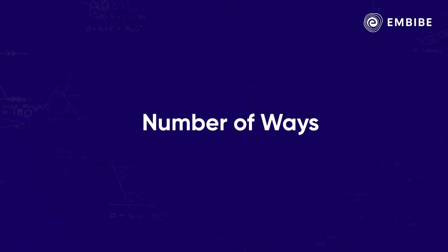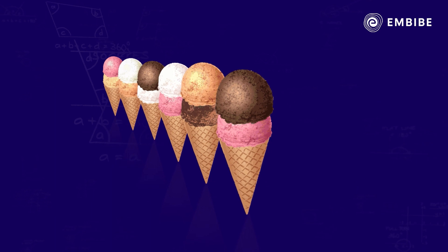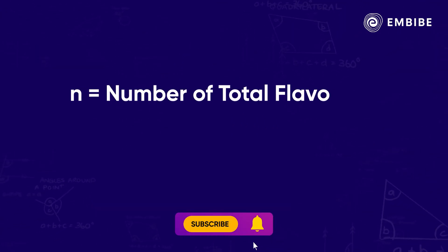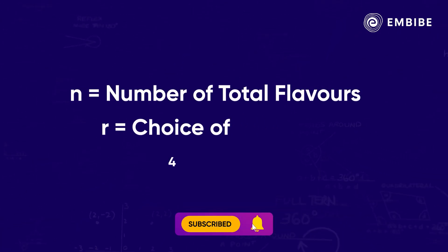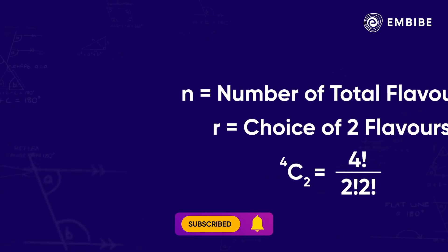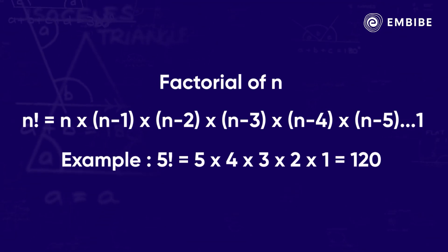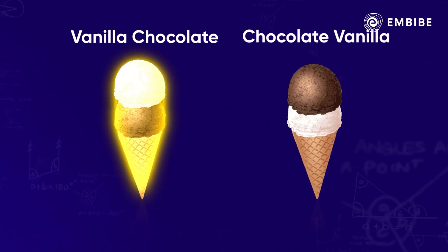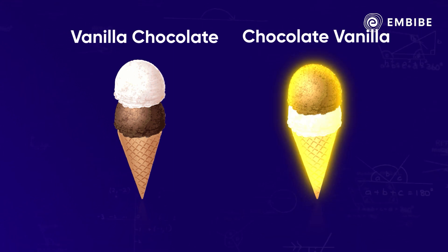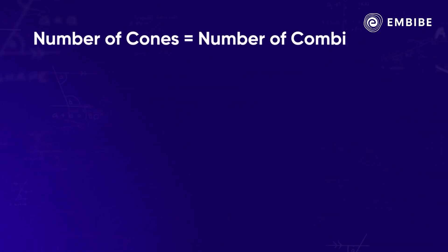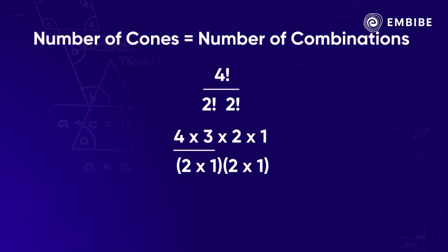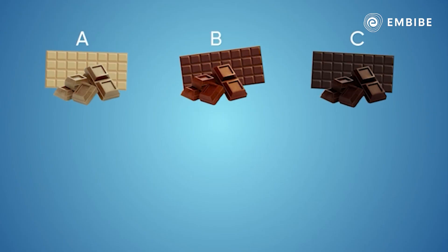It gives you the number of ways in which a set of two ice cream flavours get selected. Hence, n is equal to the number of total flavours and r is the choice of two flavours that we have. We do factorial n in the formula because it eliminates redundancy — there is a high chance that the server could pack two cones marked as vanilla chocolate flavour and chocolate vanilla flavour. So, the number of flavour combinations is equal to the number of cones, and you have to pay for six cones.